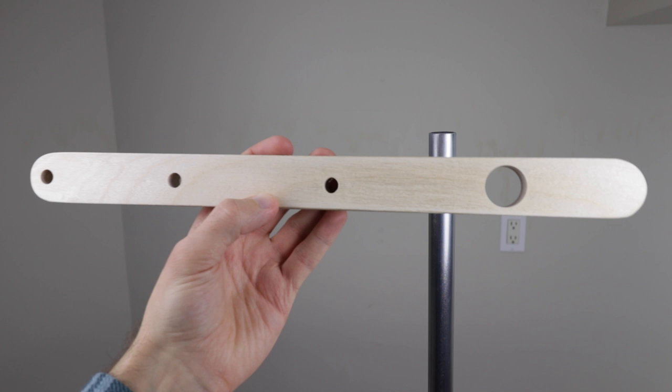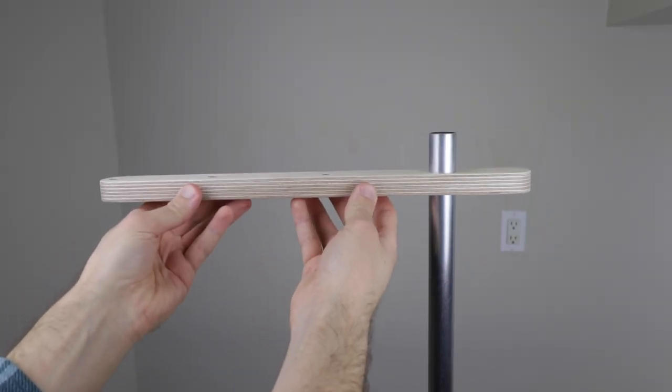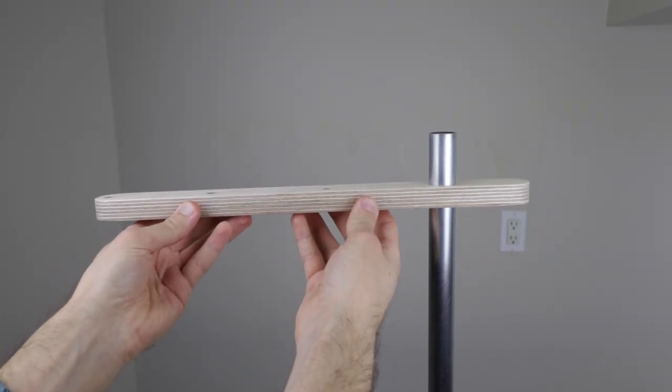Once everything had dried, I could start assembling the upper portion of the lamp. I thought about keeping the lamp arm flush on the top, but decided to add some visual interest by lowering the arm so the conduit protruded from the top.